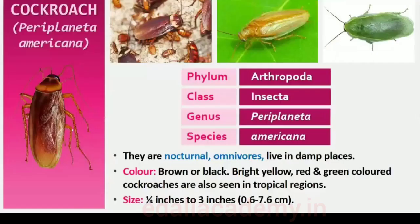Cockroaches are brown or black-bodied animals included in Class Insecta of Phylum Arthropoda. Bright yellow, red and green-colored cockroaches have also been reported in tropical regions. Their size ranges from 1/4 inch to 3 inches (0.6 to 7.6 centimeters), and they have long antennae, legs and a flat extension of the upper body wall that conceals the head. They are nocturnal omnivores that live in damp places throughout the world and have become residents of human homes, making them serious pests and vectors of several diseases.